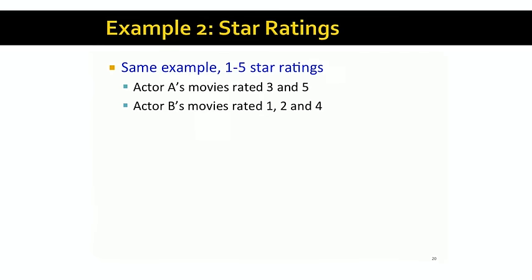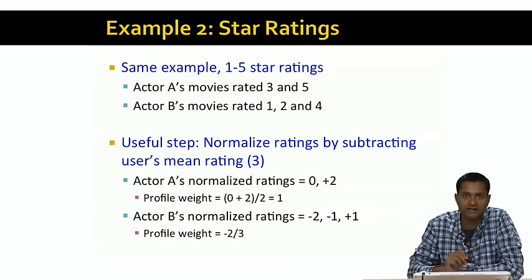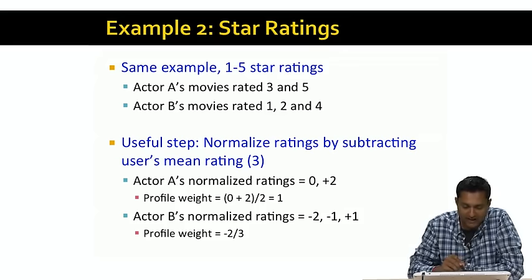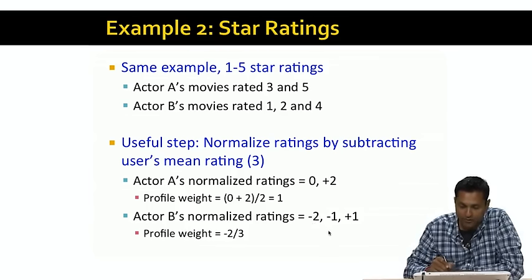The idea of normalizing ratings helps us capture the fact that some ratings are negative and some are positive. Users are very different — some are more generous in ratings than others, so a 4 might be wildly positive for one user but just average for another. To capture this, we baseline each user's ratings by their average rating. In this case, the user's average rating is 3. We subtract the average rating from each individual movie rating, so for actor A the normalized ratings become 0 and +2, and for actor B they become -2, -1, and +1.